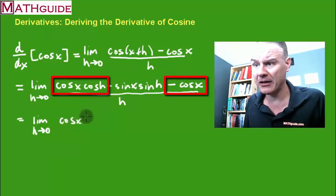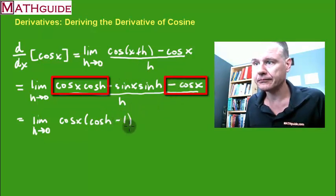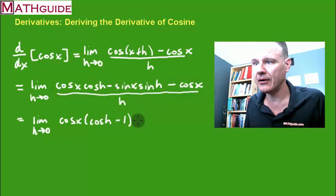So what would be left? I would have cosine of h minus this, which would be, if I took the cosine out, minus 1. And then I still have the minus sine x sine h.